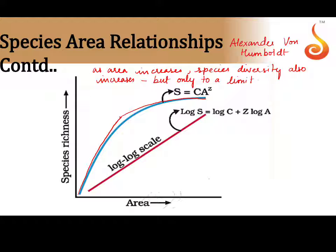According to Alexander von Humboldt, a rectangular hyperbola is formed. When we take the log of the entire thing, we get an equation: log S equals log C plus Z log A.